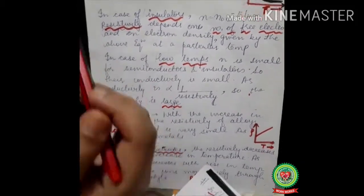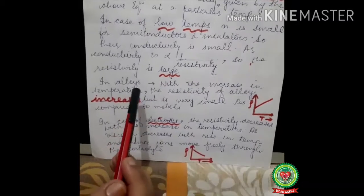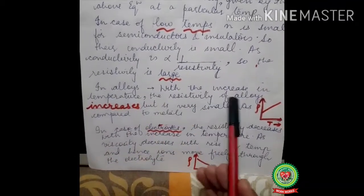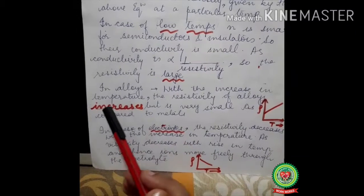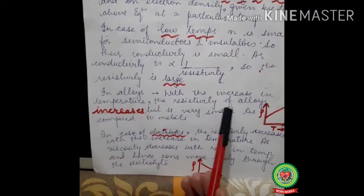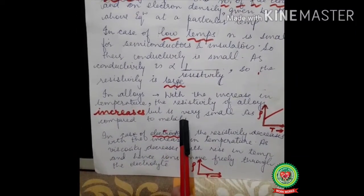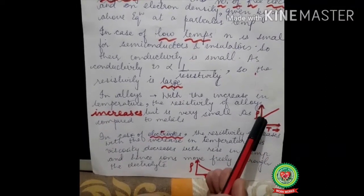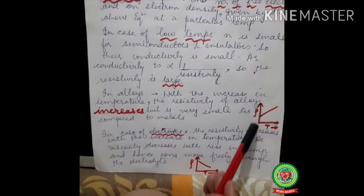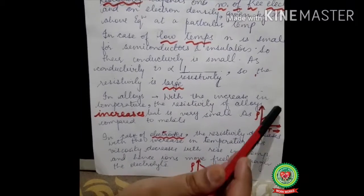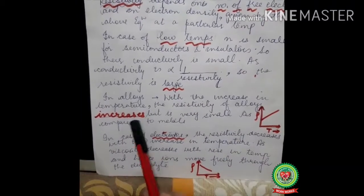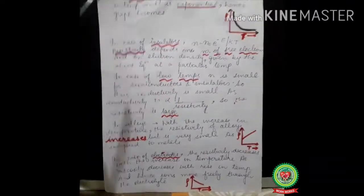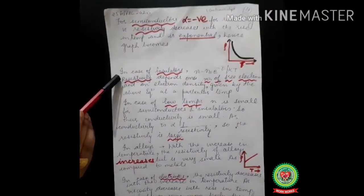For alloys, the resistivity also increases with the rise in temperature, but by a very small amount compared to metals. The graph goes straight upward, showing resistivity increasing with temperature, but the slope is very gentle.